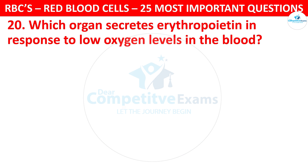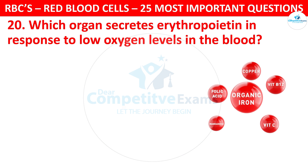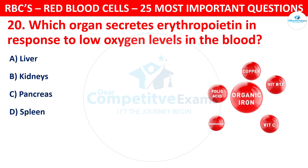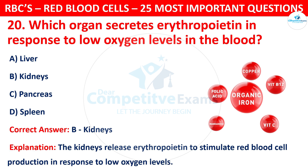Question 20. Which organ secretes erythropoietin in response to low oxygen levels in the blood? Your options are: Liver, Kidneys, Pancreas, or Spleen. The correct answer is B, that is Kidneys. The kidneys release erythropoietin to stimulate red blood cell production in response to low oxygen levels.